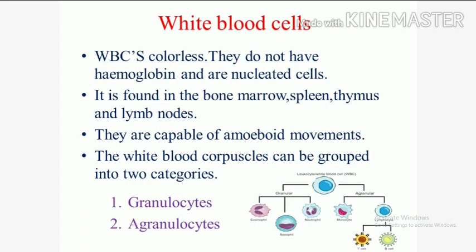White blood cells (WBC) are colorless. They do not have hemoglobin and are nucleated cells. They are found in the bone marrow, spleen, thymus, and lymph nodes. They are capable of amoeboid movements. White blood corpuscles can be grouped into two categories: granulocytes and agranulocytes.